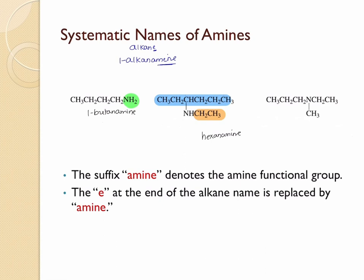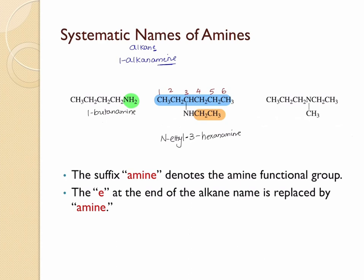We follow the same rules as for alkane molecules: make sure the functional group gets the lowest possible number. Going from left to right, the functional group gets the number three, so this part is 3-hexanamine. There is also an ethyl group attached to the nitrogen, so we use the letter N before it to specify the ethyl group is connected to nitrogen, leaving a hyphen between N and E. The complete name is N-ethyl-3-hexanamine.